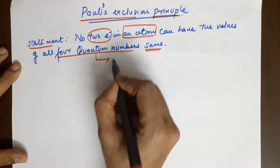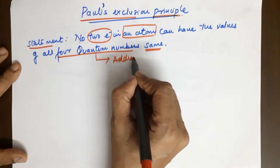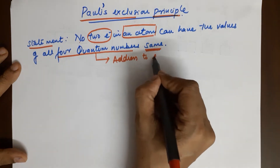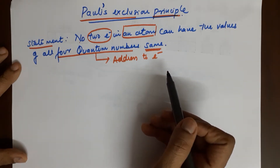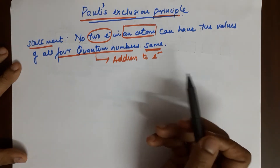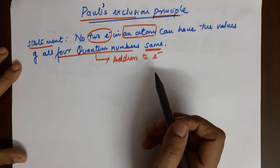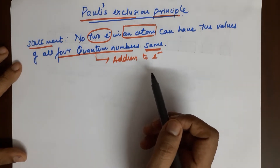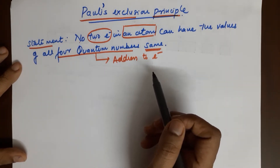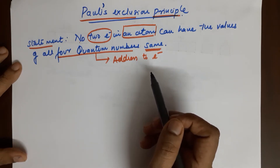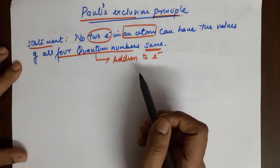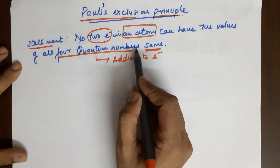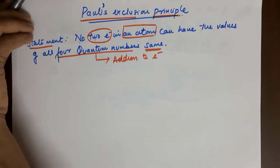Quantum numbers give you the address of the electron. If two electrons have the same address — everything is the same about them — then they would repel each other. They are negatively charged, and if their spins are also the same, they would repel and the atom would become unstable. So no two electrons will have the same set of quantum number values — that is the principle.